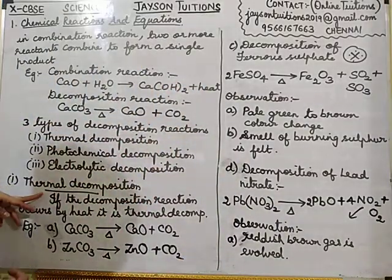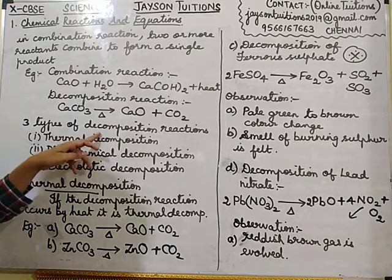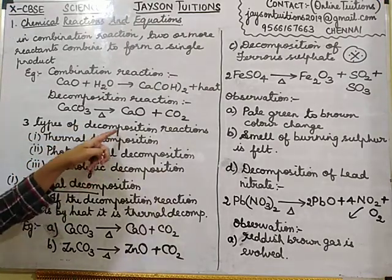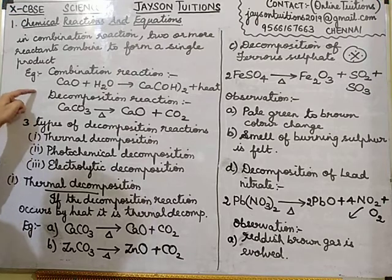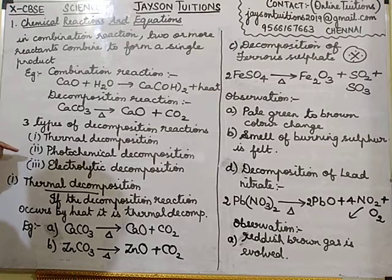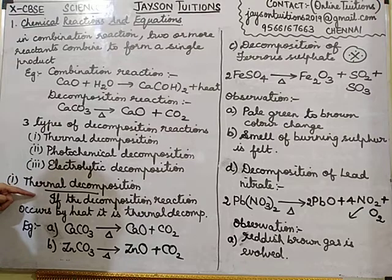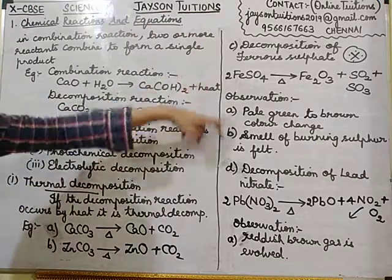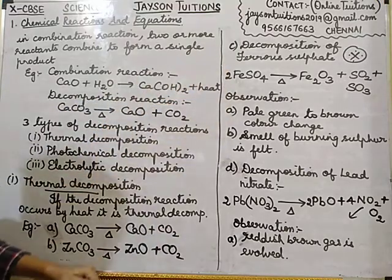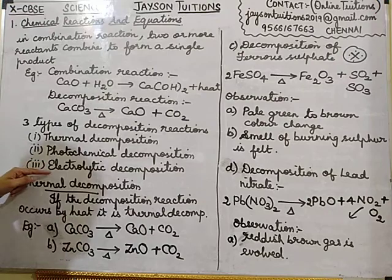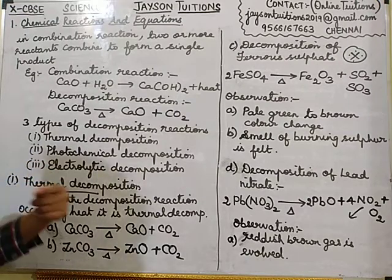So what is thermal decomposition reaction? We have understood decomposition reaction, why decomposition reactions are considered opposite of combination reactions, and the three types — thermal, photochemical, and electrolytic decomposition. We have studied what is thermal decomposition with four examples. The third example — ferrous sulfate — is very, very important.